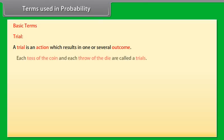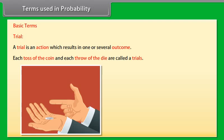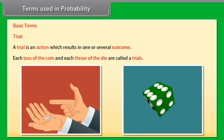Terms used in probability. Before going further, let's learn about basic terms used in probability. Trial - a trial is an action which results in one or several outcomes. For example, each toss of the coin and each throw of the dice are called trials.